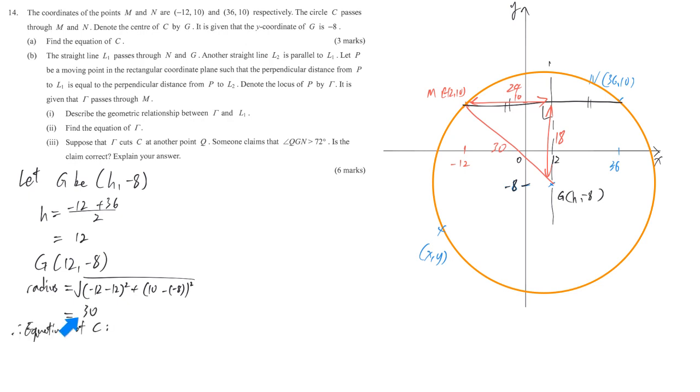So for the equation of circle, just any point to the center, the distance is fixed to be 30. So we write down x minus 12 square together with y minus negative 8, that means y plus 8 bracket square is equal to 30 square. Within two minutes, you should already get the answer of part A. If you remember this properly, perpendicular bisector will pass through the center.